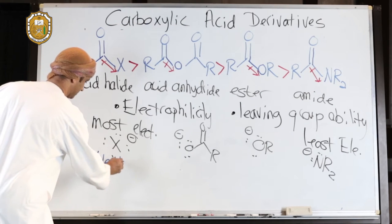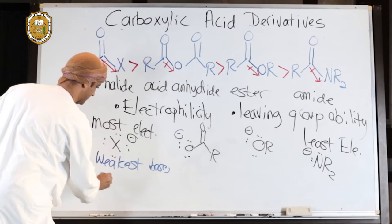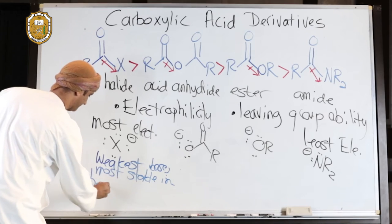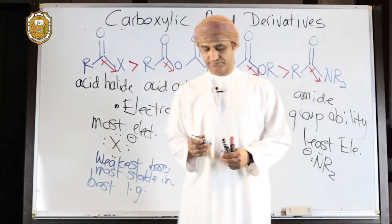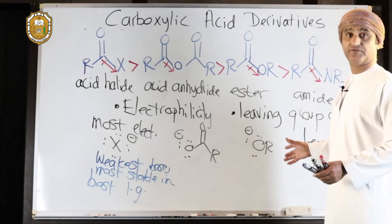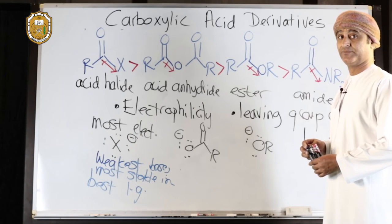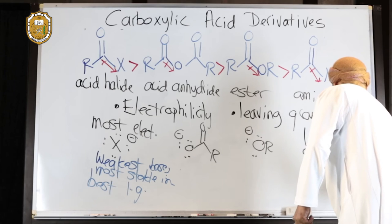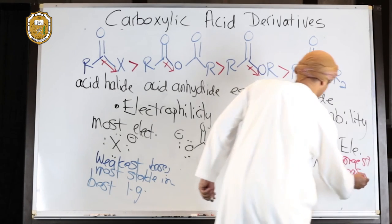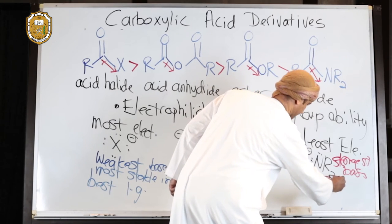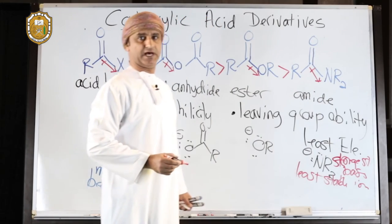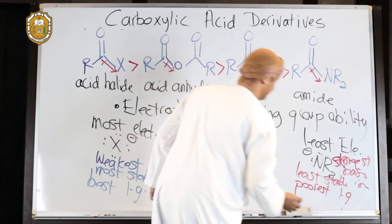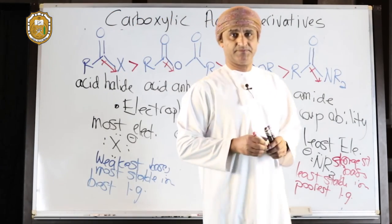Halides are the best leaving groups because they are the weakest bases and the most stable ions, making them the best leaving groups overall. Amide ions, on the other hand, come from amines and are very strong bases — in fact the strongest among these — making them the least stable ions and therefore the poorest leaving groups.